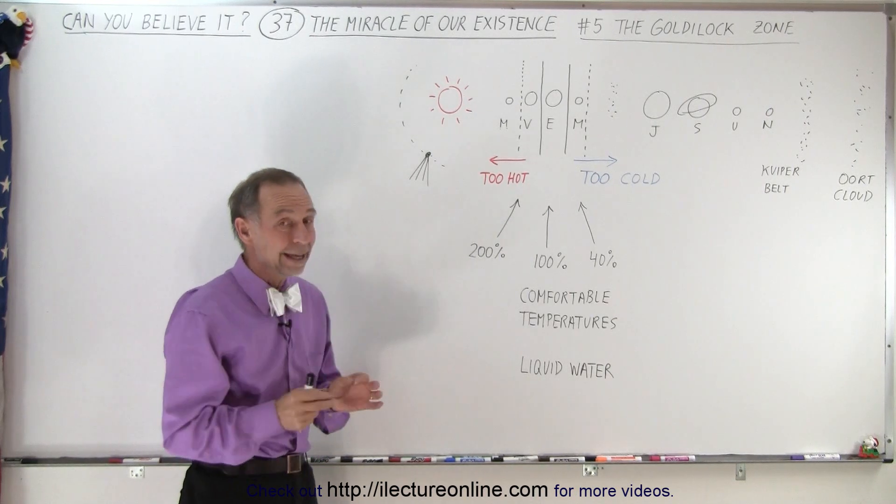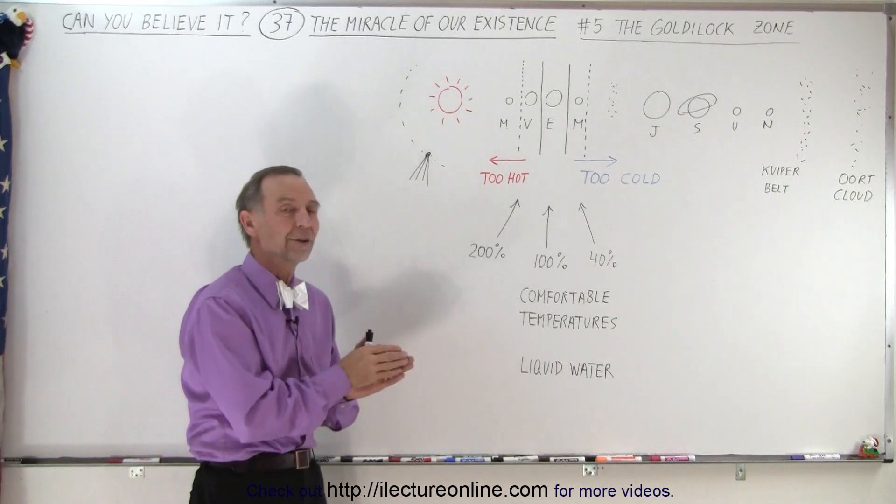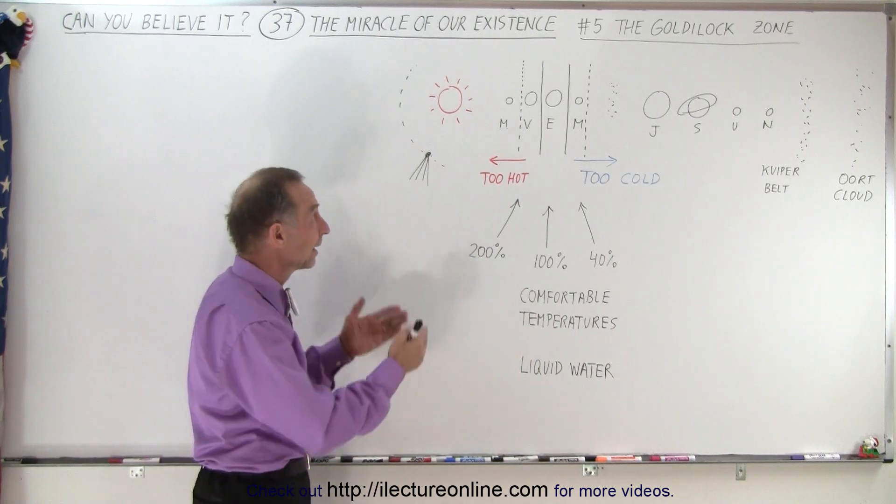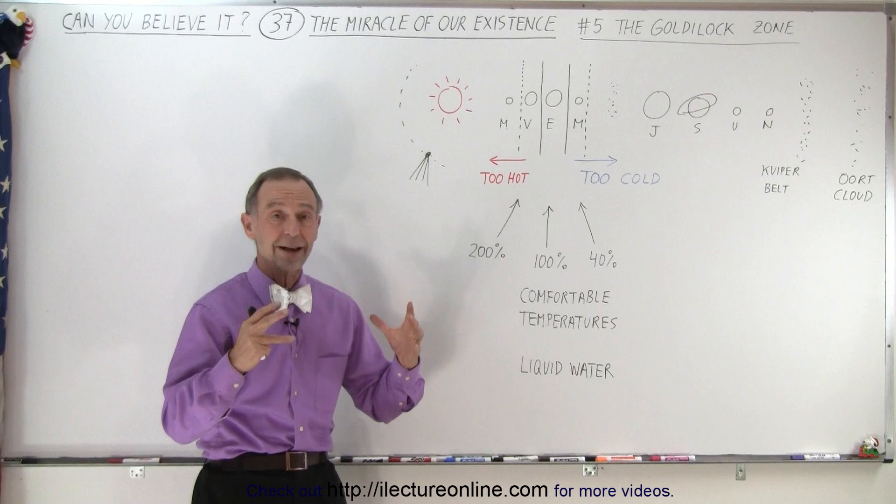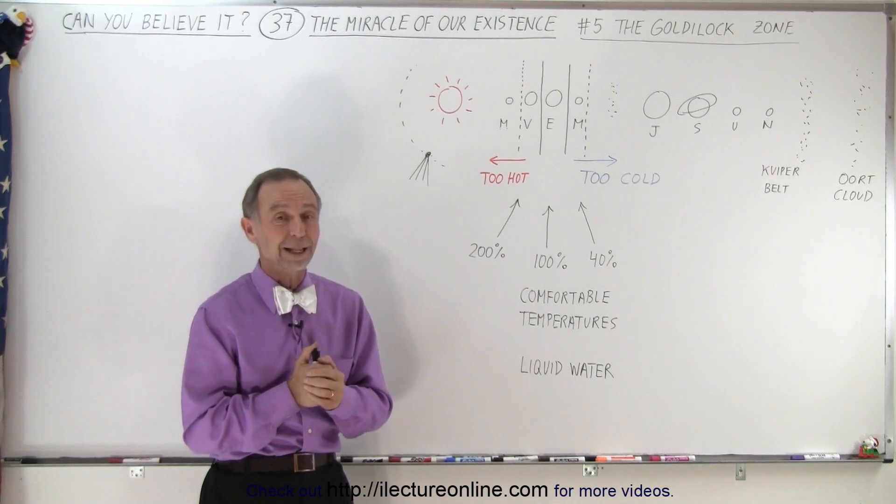So we can see, again, even though terrestrial planets are rare, finding one in the Goldilocks zone is even much more rare. And again, that is the miracle of life on Earth. The fact that the Earth is the right size and right in that Goldilocks zone makes it a good planet for life.